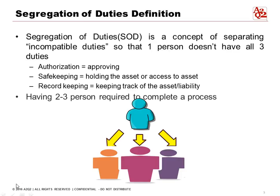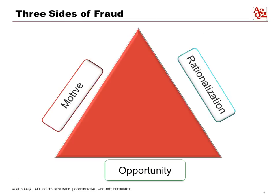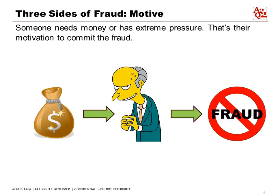What we want to do is have two to three people required to complete a process. In internal controls we are concerned about errors and fraud. Fraud generally happens when three conditions are present: motive, rationalization, and opportunity.